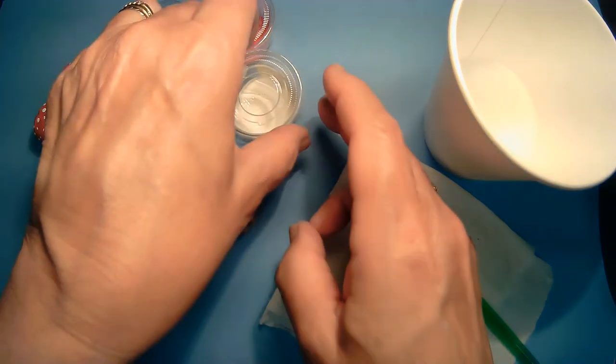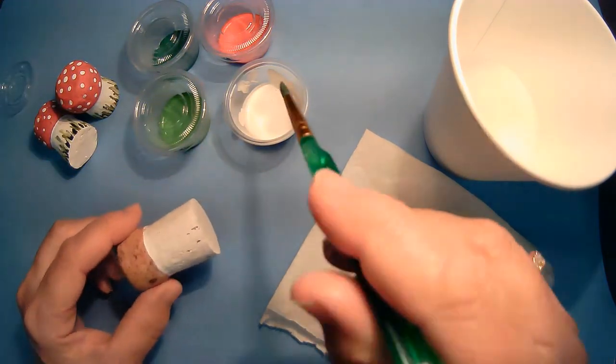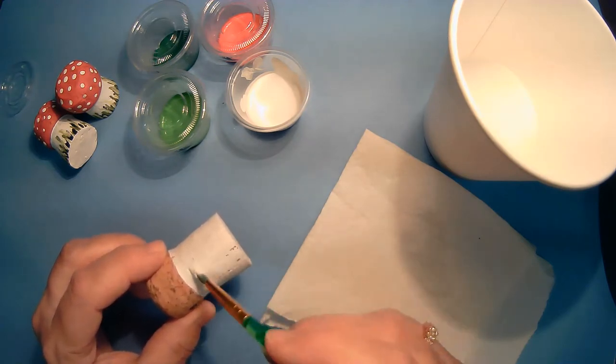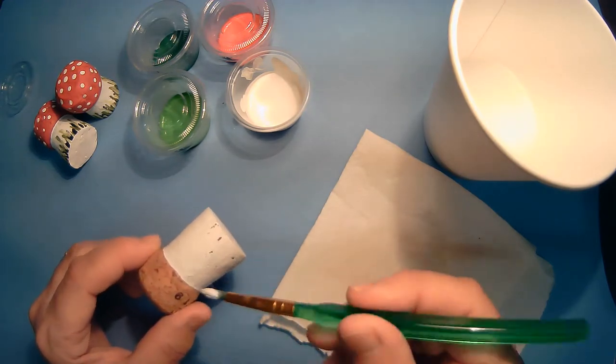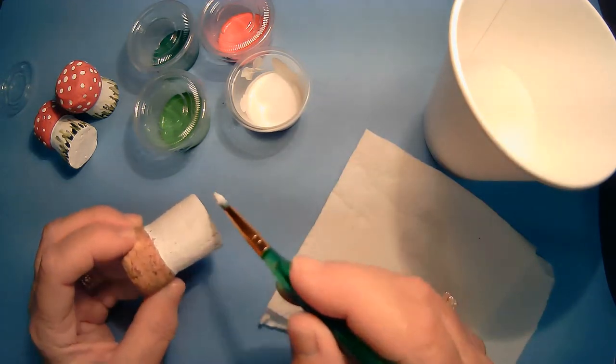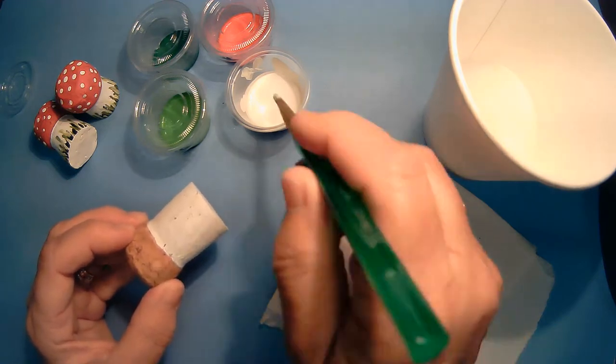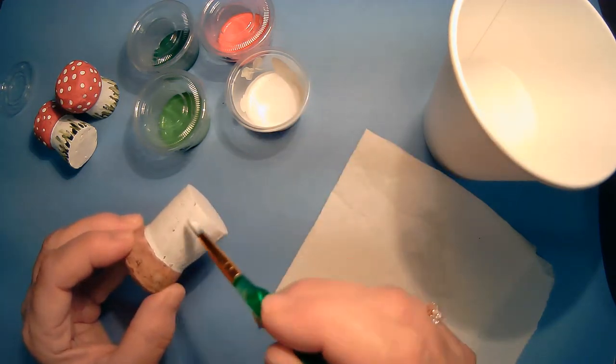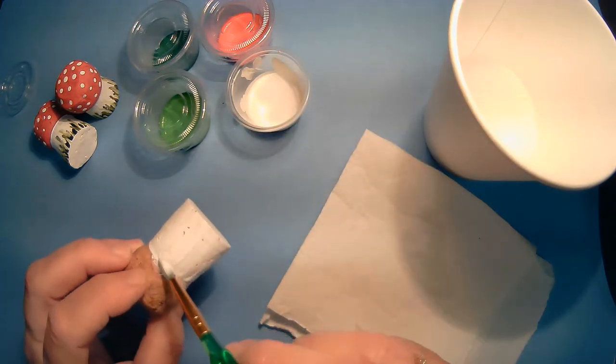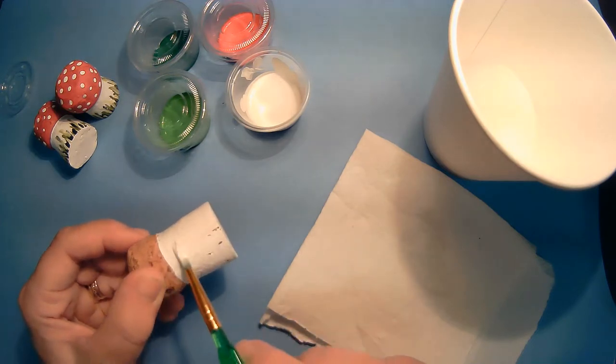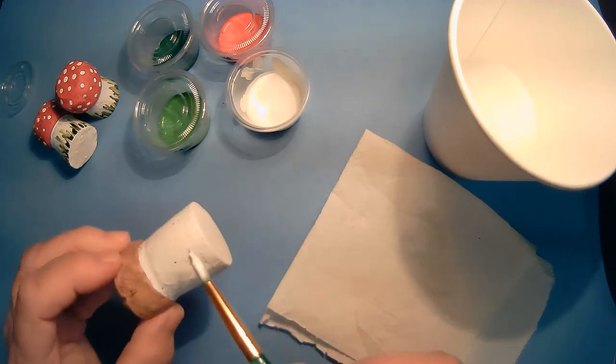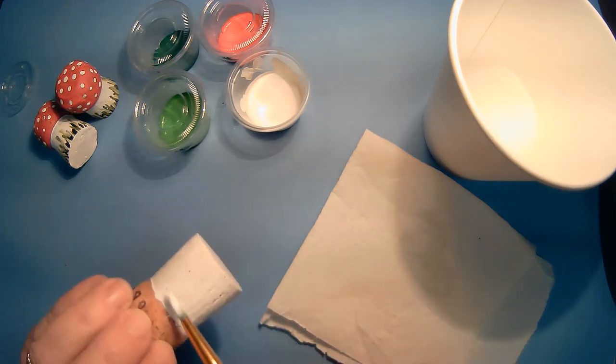And we're ready for our second coat. I actually put my mushroom in front of a fan so it dried a little bit quicker. So you just do the same thing again. Just cover the area with white paint so you can't see any of the cork. Nice and smooth and no blotches because then it takes forever to dry. And it's just hard to wait.